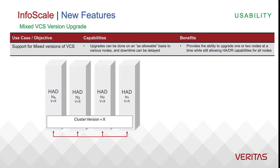If you're familiar with VCS in the past, you know that we had the concept of rolling upgrades, where we would do each node in the cluster as a rolling process to make sure that any applications you had running on your cluster weren't involved in any downtime. What we've done now in version 8 is we've taken that one step further to allow two different versions of the cluster software to be running in the same cluster for an extended amount of time.